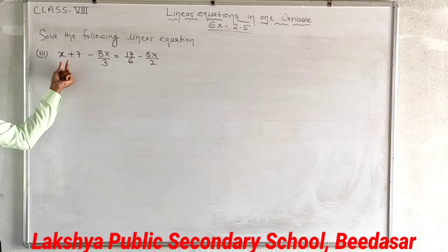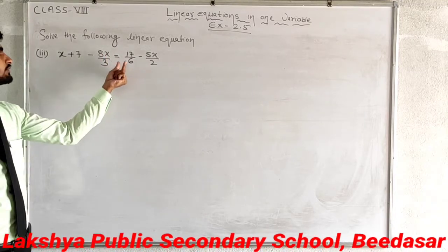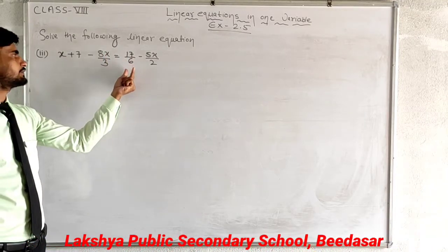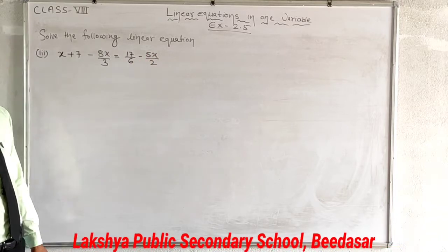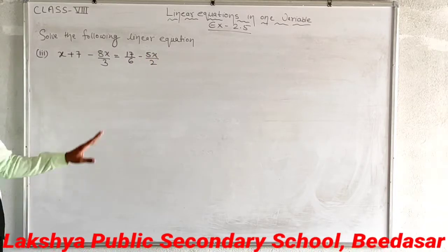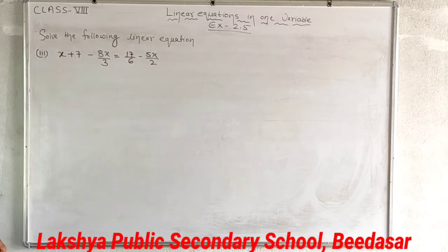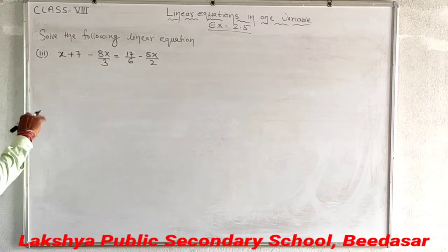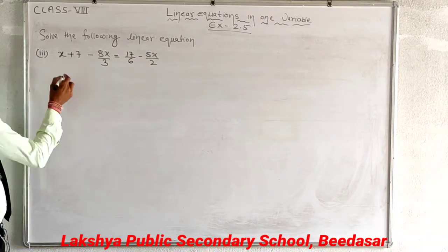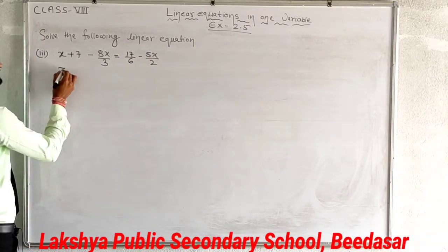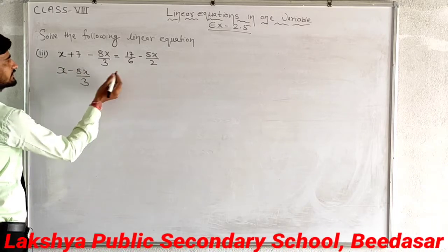Question number 3: x plus 7 minus 8x upon 3 is equal to 17 upon 6 minus 5x upon 2. First, separate the variables to one side and constants to the other side. We get x minus 8x upon 3 on the left, and 17 upon 6 minus 7 upon 1 on the right.